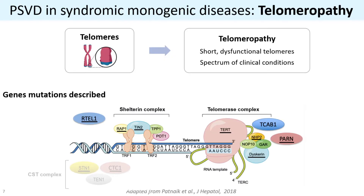We then present some PSVD manifestation in telomeropathic disease. As a quick introduction, telomeres are DNA repeated sequences present at the ends of chromosomes whose main function is to maintain telomere stability and avoid degradation. The maintenance of telomeres requires an enzyme called telomerase and other gene products involved in the telomerase assembly and recruitment. Any defect in one of those genes leads to dysfunctional telomeres and a wider spectrum of clinical conditions. I will start describing those mutations that affect the telomere and shelterin complex.